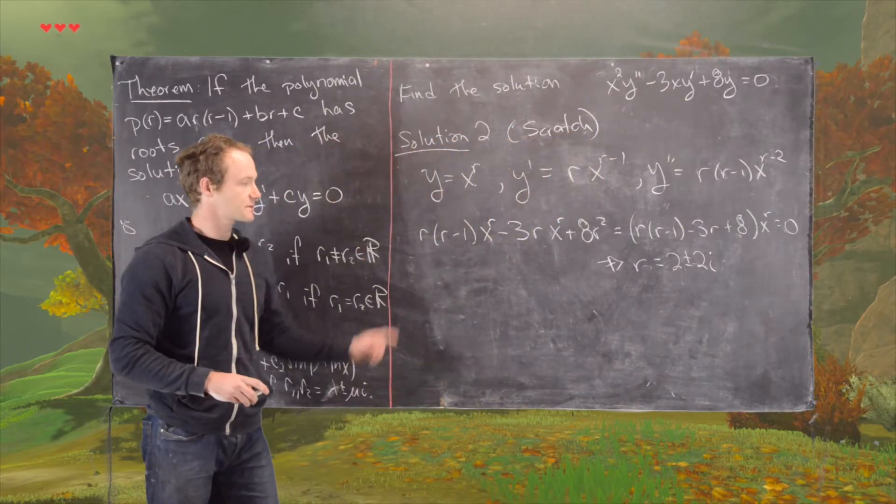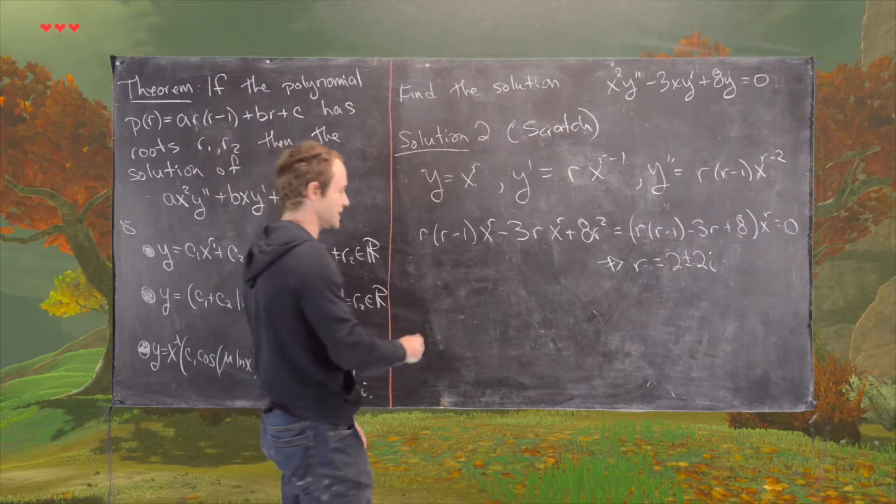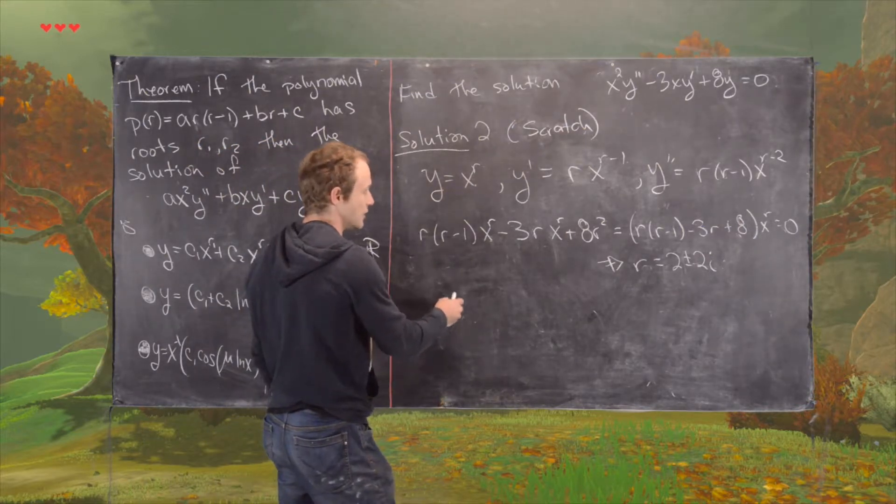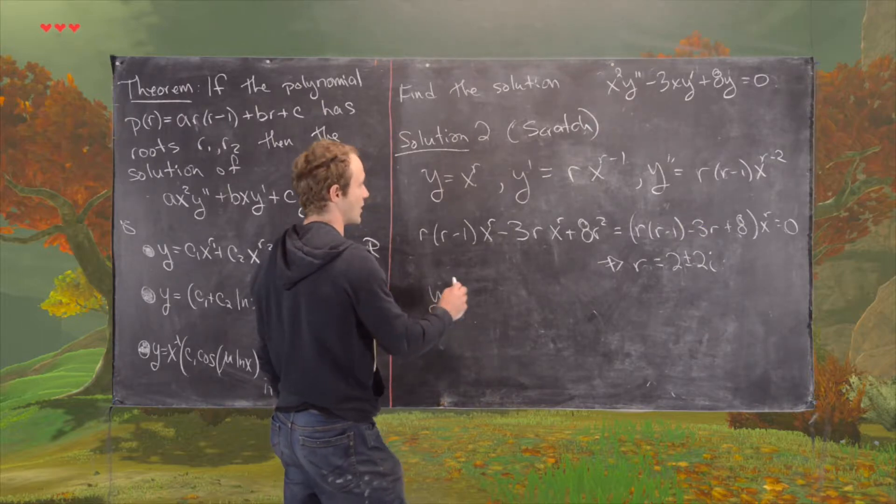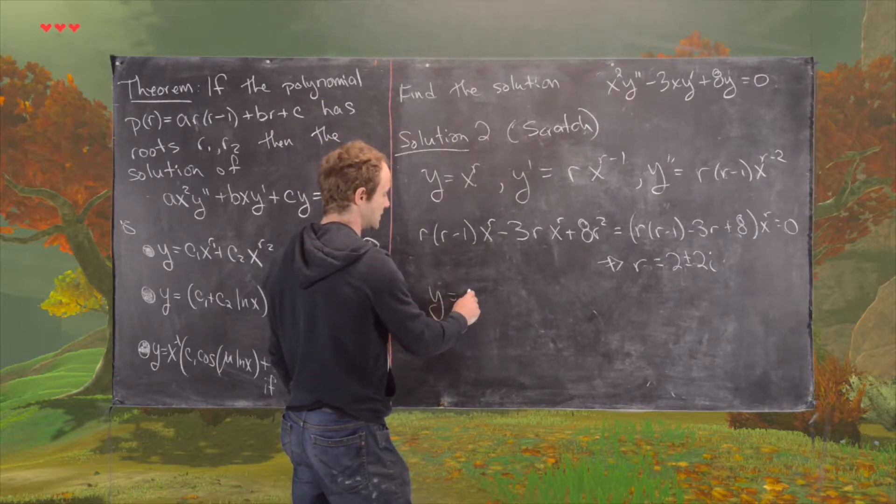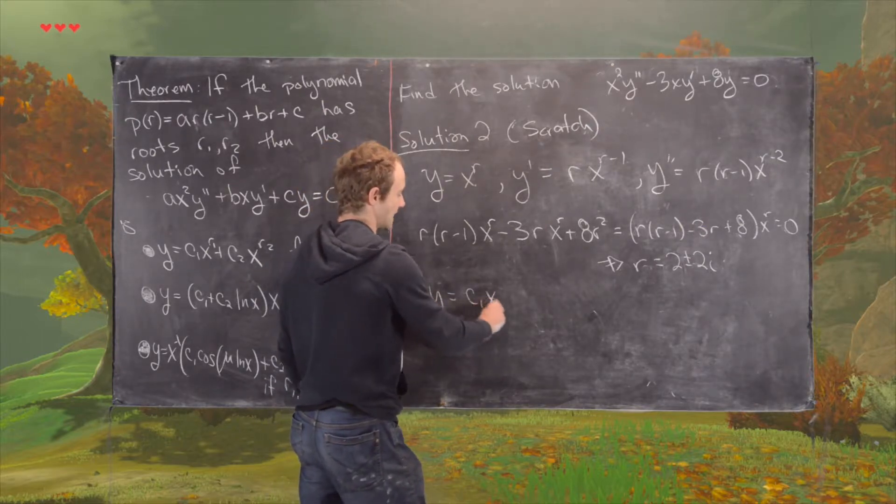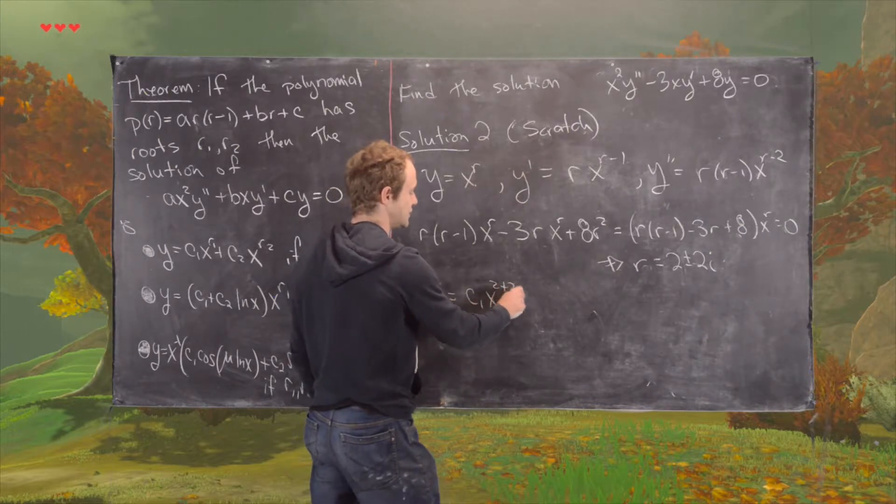And then from there, I'll just notice that our solutions will be of the form y equals c1 x to the 2 plus 2i plus c2 x to the 2 minus 2i, and we need to make some sense out of that.